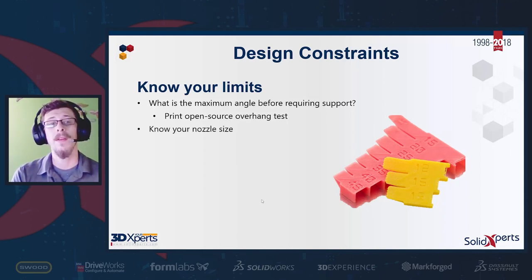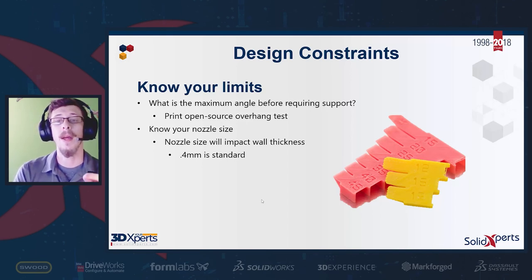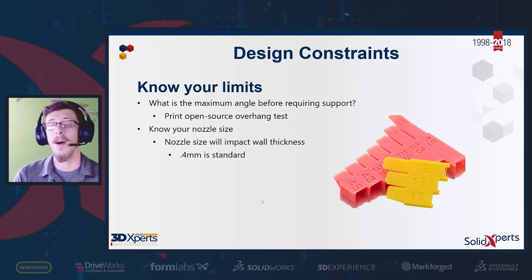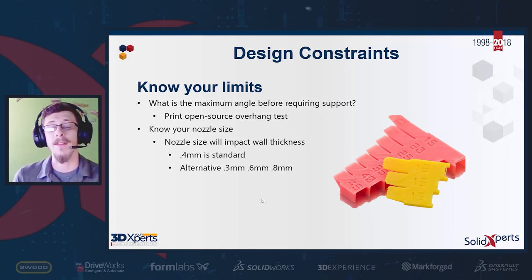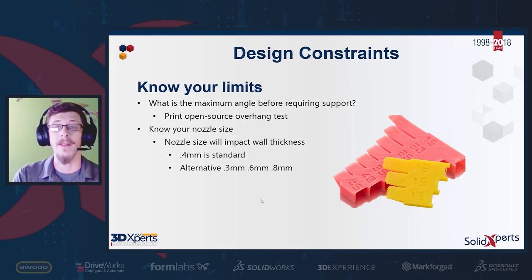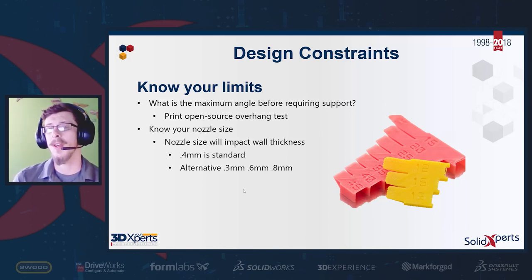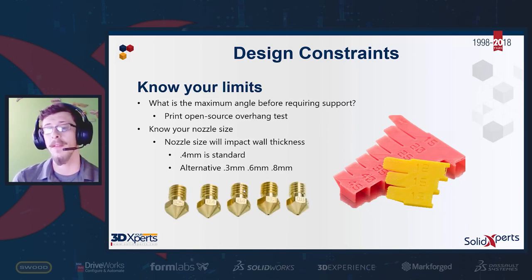Another aspect to be aware of is your nozzle size. It's pretty common that printers use a 0.4mm nozzle, depositing filament in widths of 0.4mm. There are other manufacturers that support 0.2, 0.3, 0.5, all the way up to 1.2mm. Check with the manufacturer and make sure they support different size nozzles before adding your own.